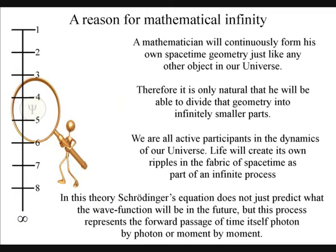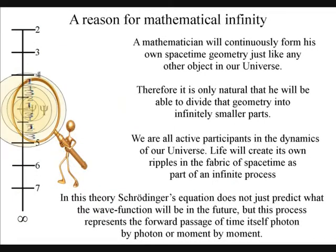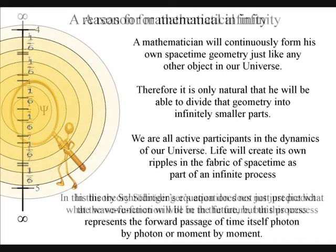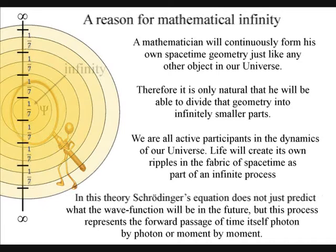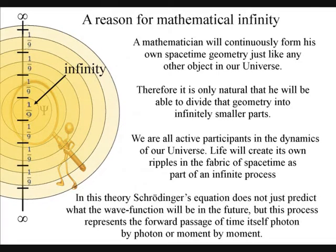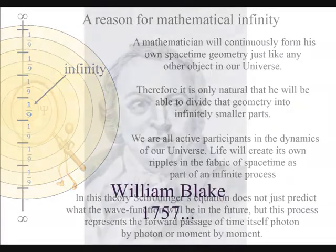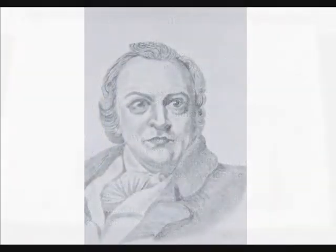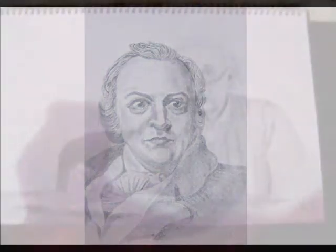A mathematician will be able to divide any number into infinitely smaller parts because of this process. For a poet or artist, this process continuously forms a blank canvas that they can interact with, forming the possible into the actual.